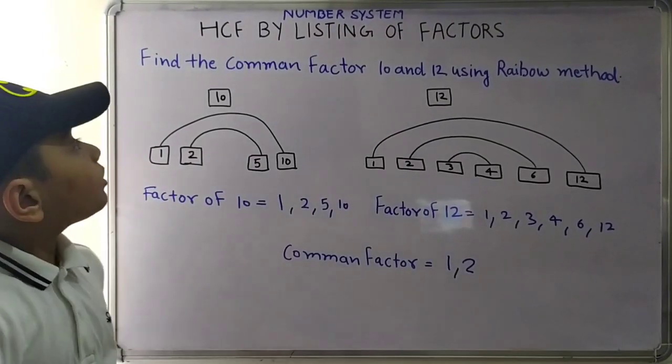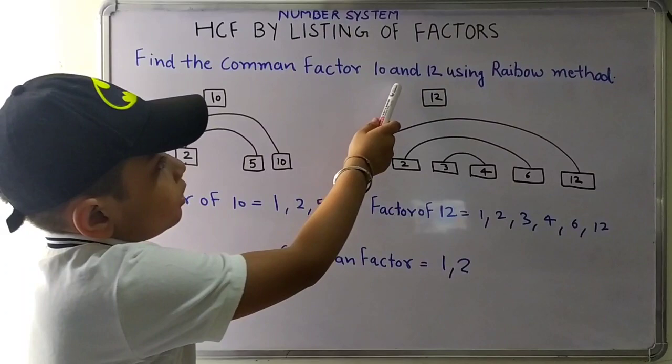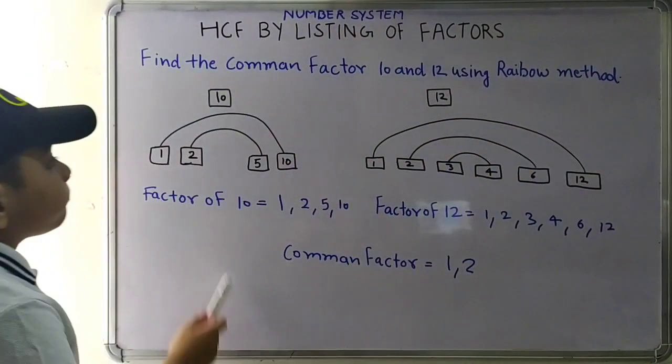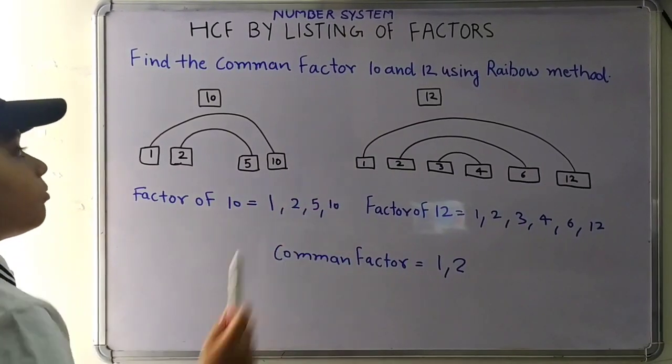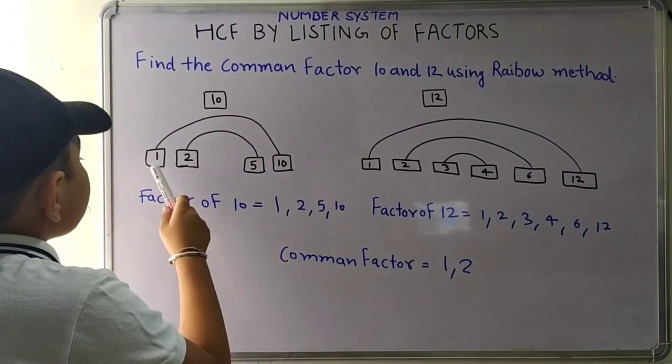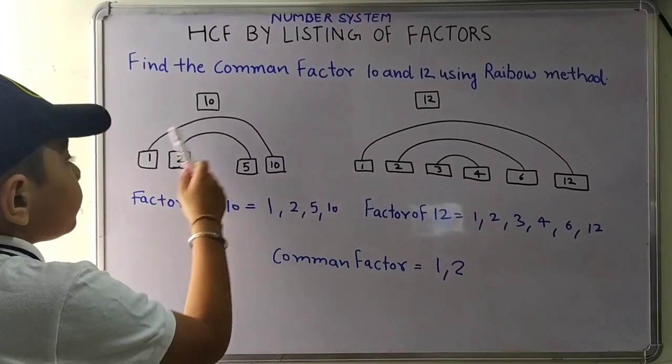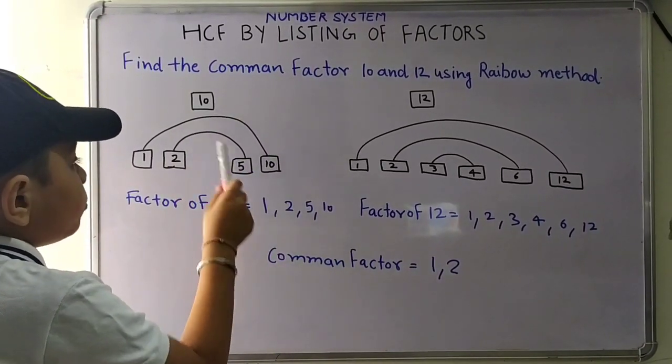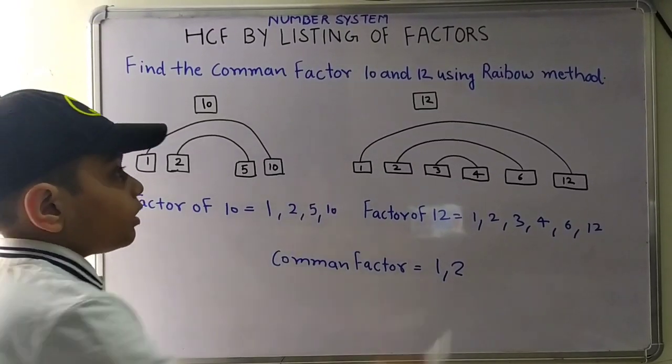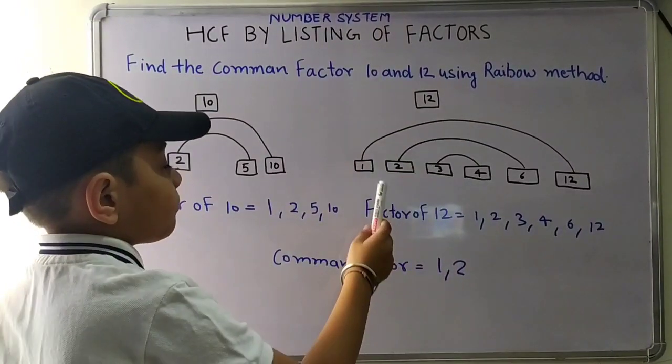Now I will show you how to find the common factor of 10 and 12 using rainbow method. This is the rainbow method. The factors of 10 are 1 and 10, 2 and 5. These are the factors of 10. Now let's move to 12.